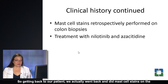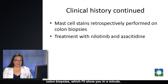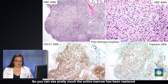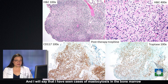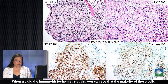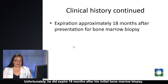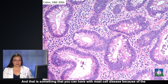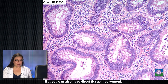Getting back to our patient, we went back and did mast cell stains on the colon biopsies. He was treated with nilotinib — targeting his mast cell disease — and azacitidine for his CMML. Unfortunately, this was his bone marrow trephine after that treatment, and you can see that pretty much the entire marrow has been replaced by a now much more spindle-looking infiltrate. I have seen cases of mastocytosis in the bone marrow misdiagnosed as granulomas, so that's always something to keep in mind when you see spindle-type lesions. When we did the immunohistochemistry, you can confirm the majority of these cells are mast cells. Unfortunately, he did expire 18 months after his initial bone marrow biopsy.